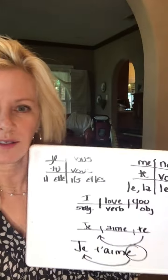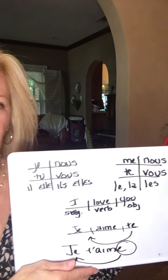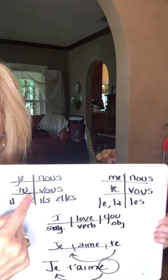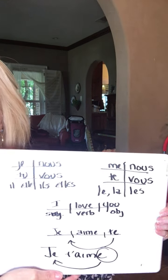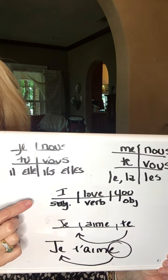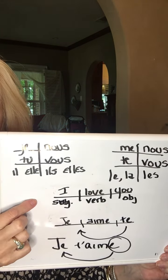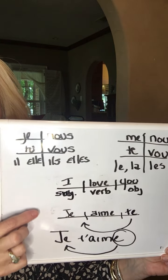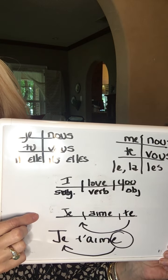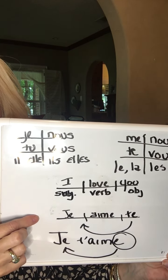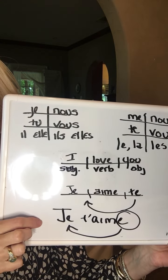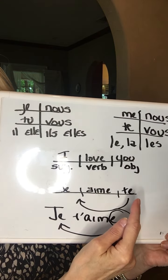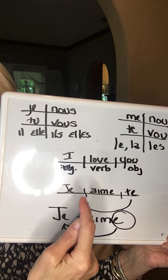On this chart, these are your subject pronouns and these are your object pronouns. The way you diagram the sentence in English is like this. You diagram it the same way in French, but you'll notice that when you write the sentence, the object pronoun moves in front of the verb.